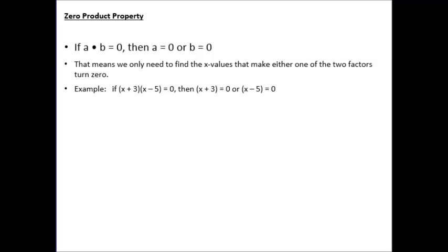Let's remember what the zero product property is. The zero product property states that if a times b is equal to zero — that is, if the product of a and b is zero — then either a has to be equal to zero or b has to be equal to zero. Those being the two factors of that product.